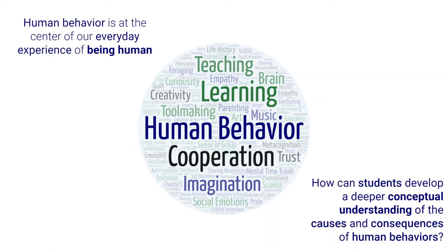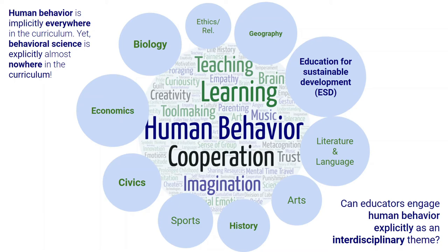When we think about the average school curriculum internationally, human behavior is implicitly everywhere — economics, civics, sports, history are all human behaviors, as is how we teach the biology of being human or how we interpret literature. Yet behavioral science is explicitly almost nowhere. Some schools integrate psychology as an elective, but generally many students can graduate from high school without any formal exposure to scientific perspectives from different disciplines on the nature of human behavior.